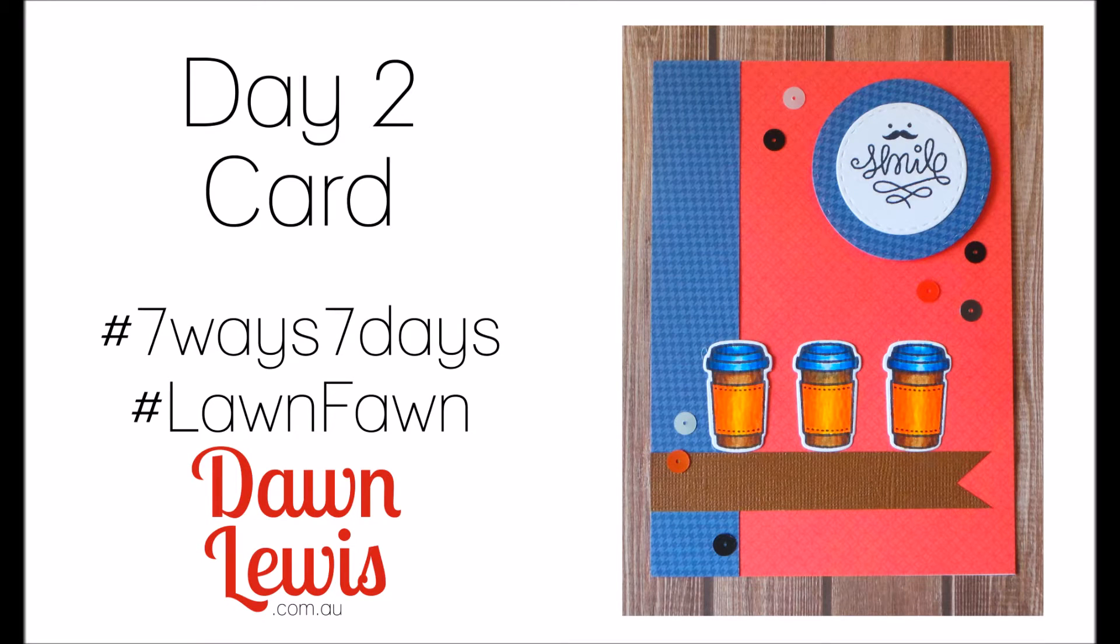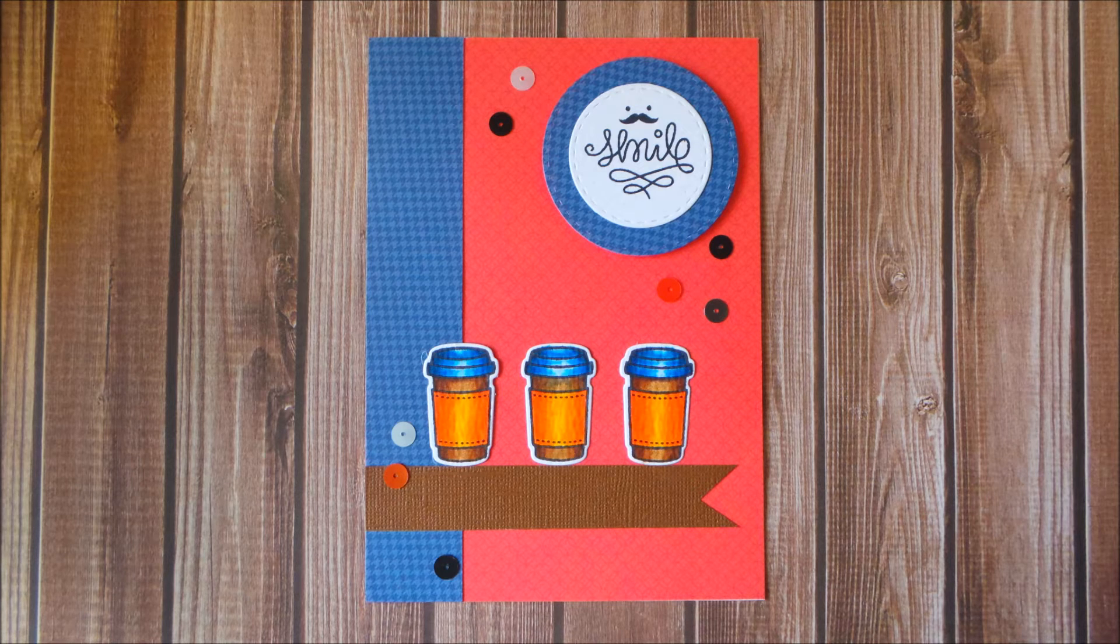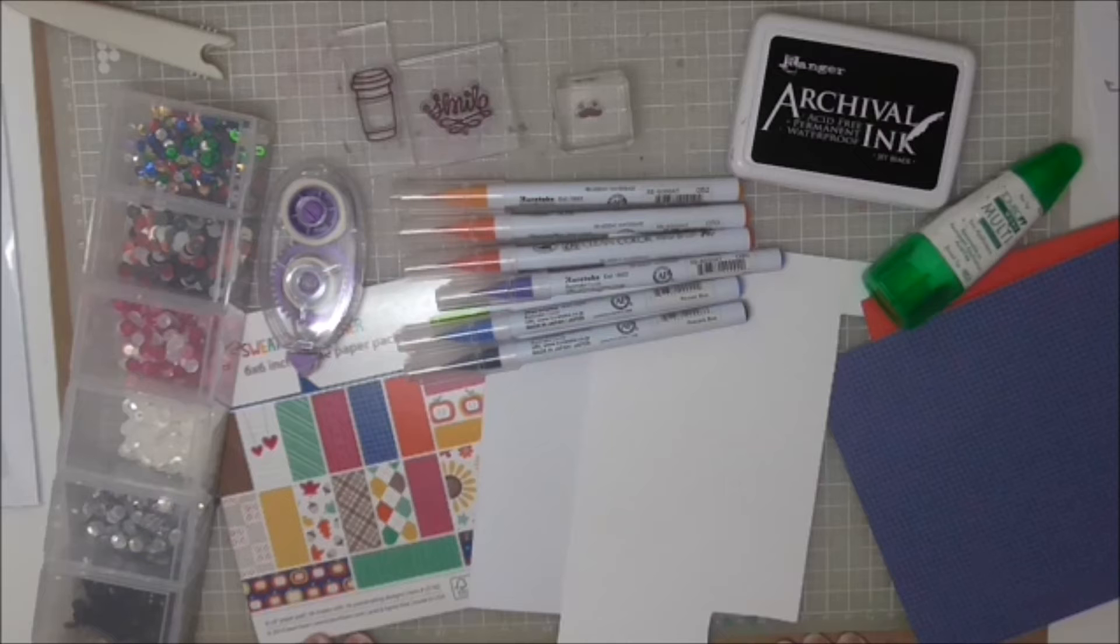Hi, Dawn Lewis here and it's day two of seven ways in seven days featuring Lawn Fawn's Love You A Latte stamp set and only three stamps. Let's have a go at making a full-size card.